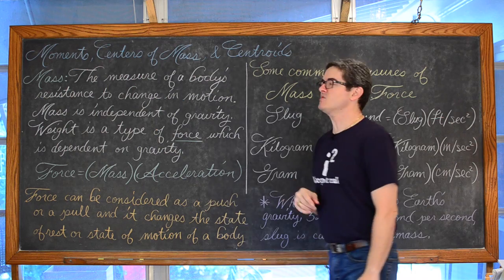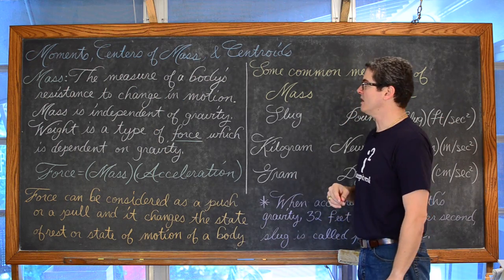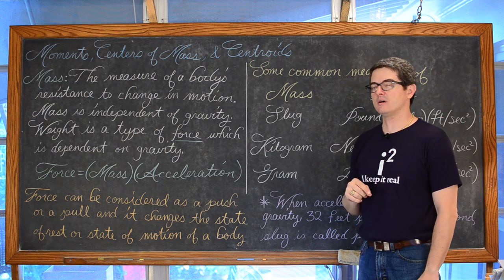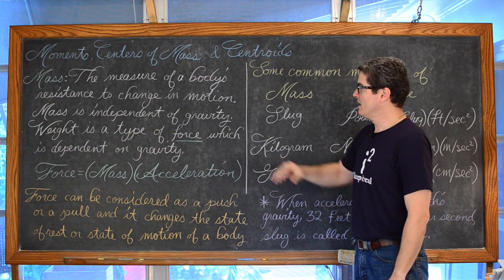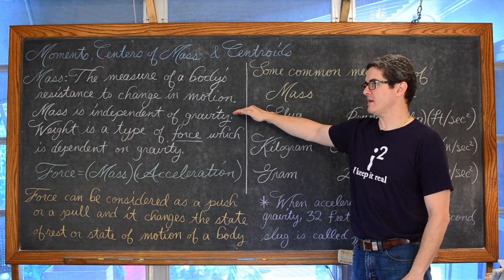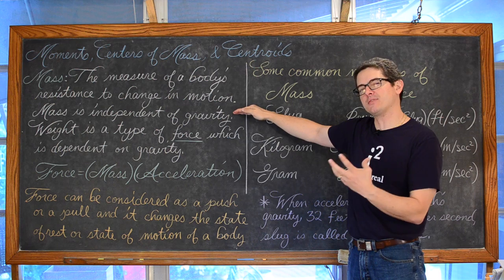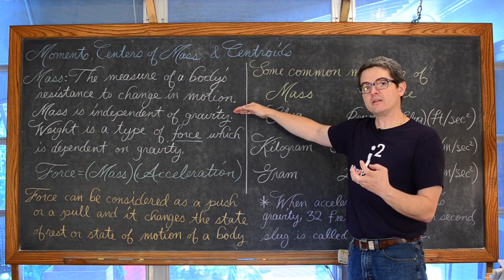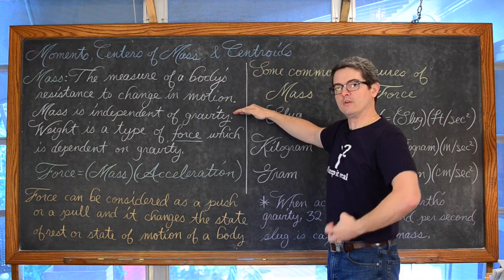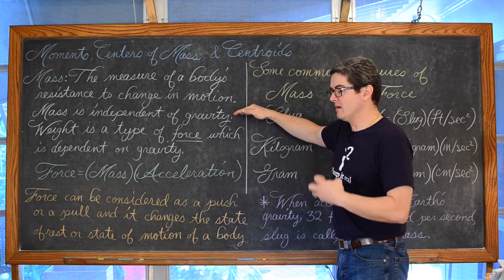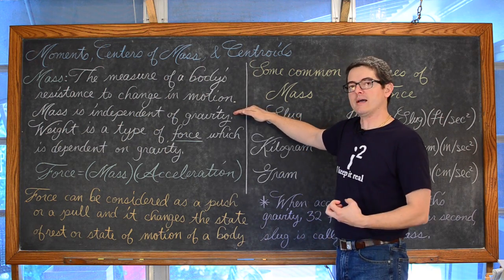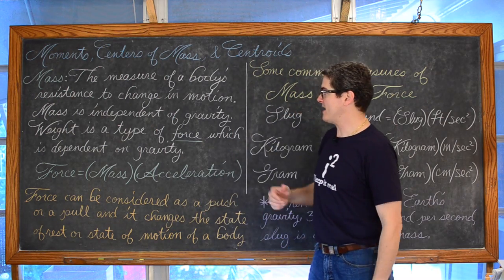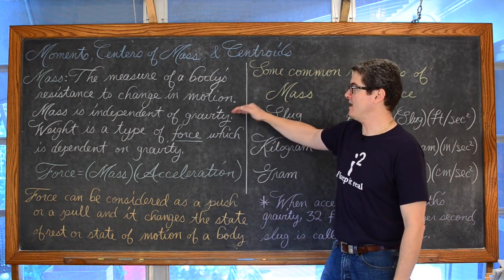Mass is the measure of a body's resistance to change in motion, and mass is independent of gravity. Mass and weight are really not the same thing, even though many people believe it, because we're all on Earth feeling gravity pulling down on us. But weight is not the same as mass — it's independent.